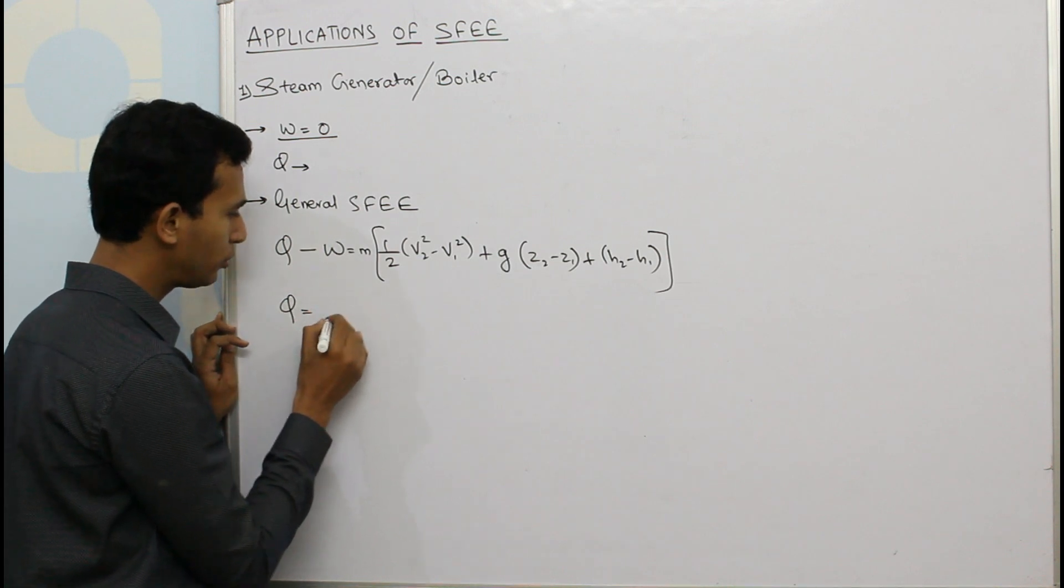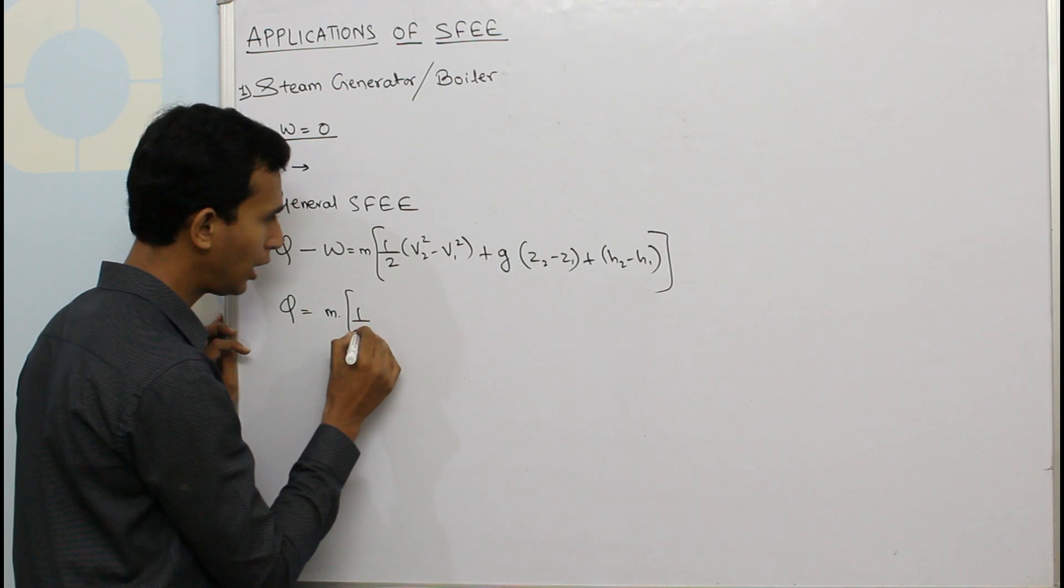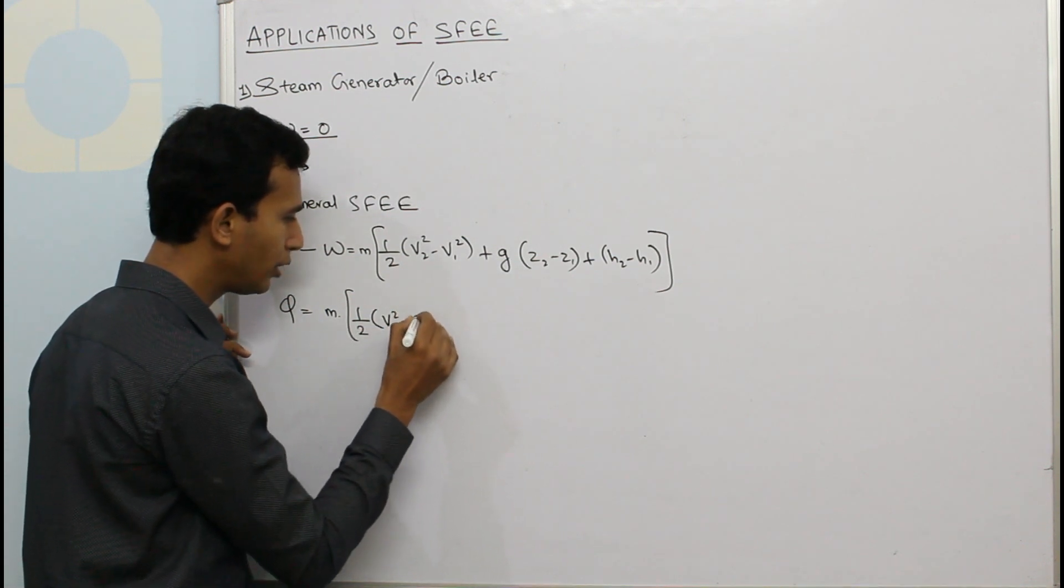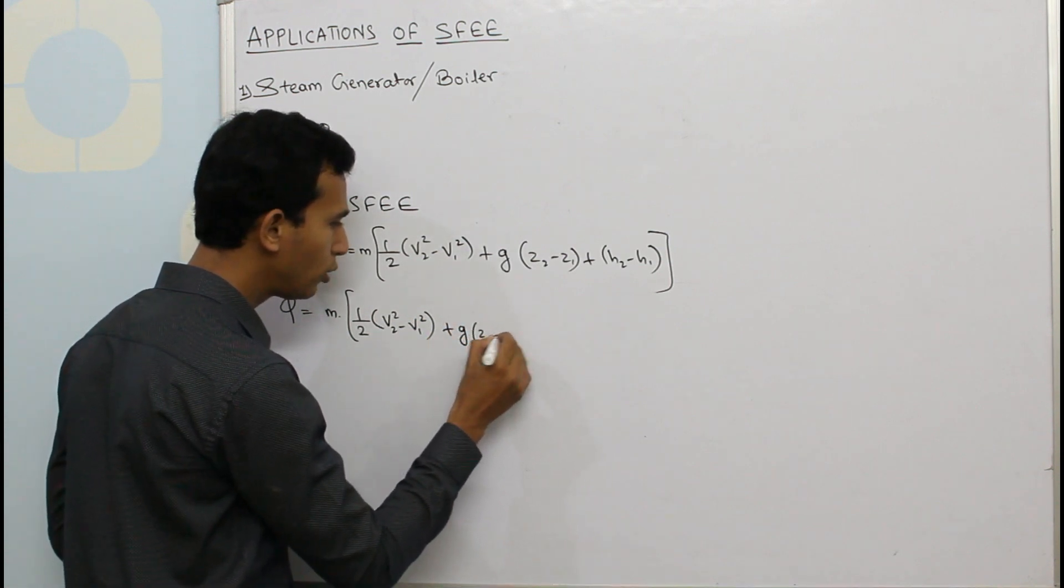Q equals m into half V₂² minus V₁² plus g into Z₂ minus Z₁ plus H₂ minus H₁.